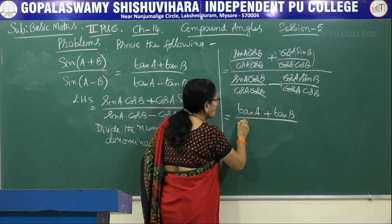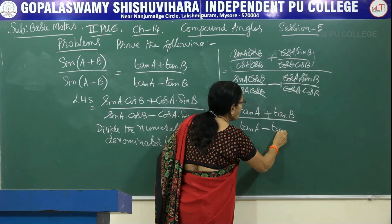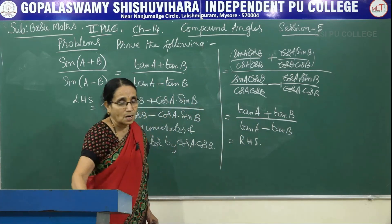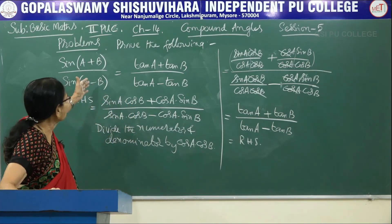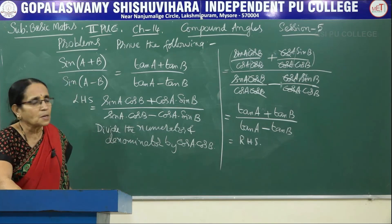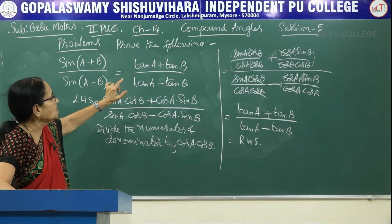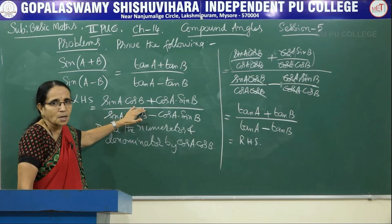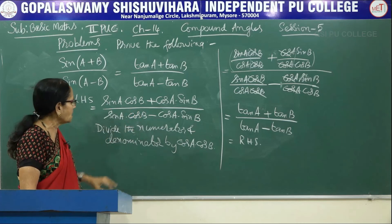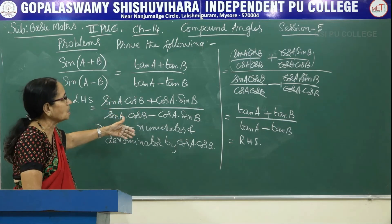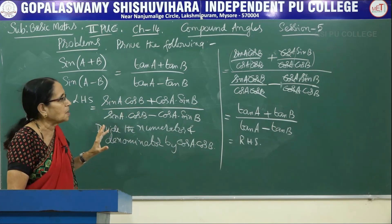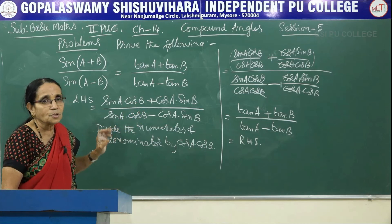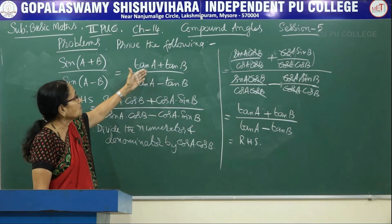So after cancellation, numerator becomes tanA plus tanB and denominator becomes tanA minus tanB, which is exactly the right hand side. Hence proved. We expanded both sin(A+B) and sin(A-B), then divided numerator and denominator by cosA·cosB to arrive at the result.